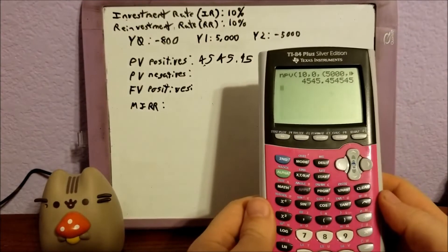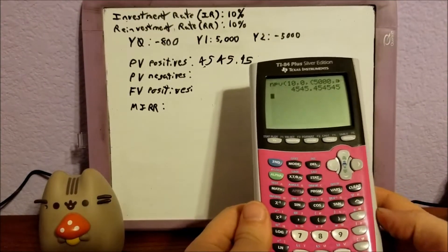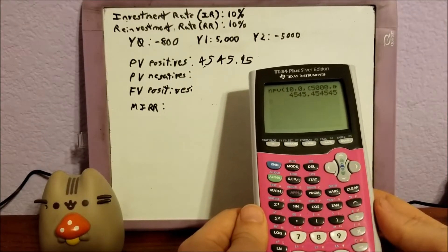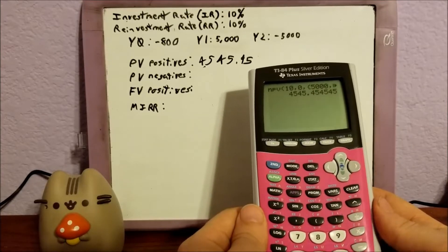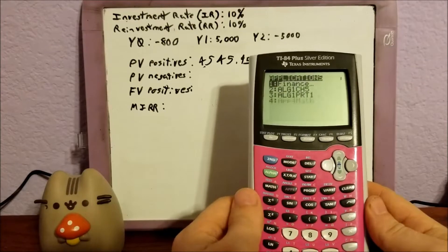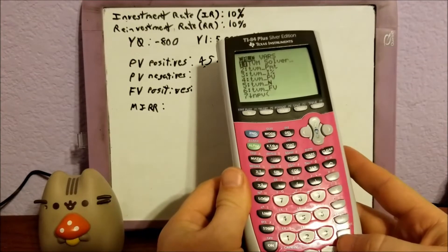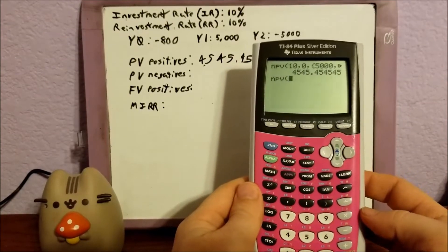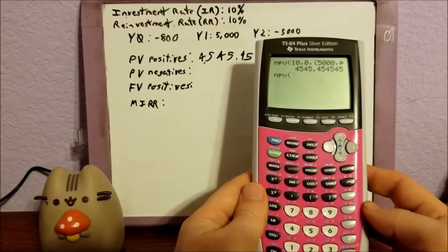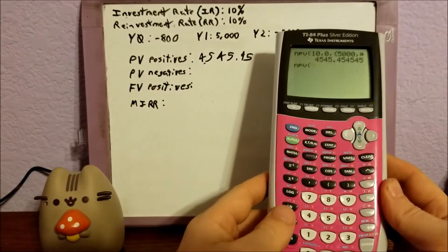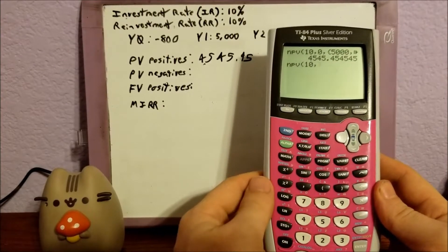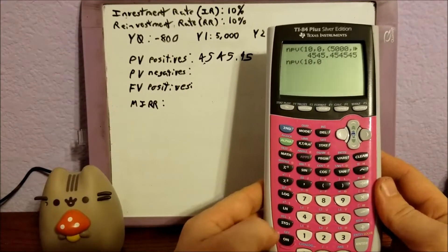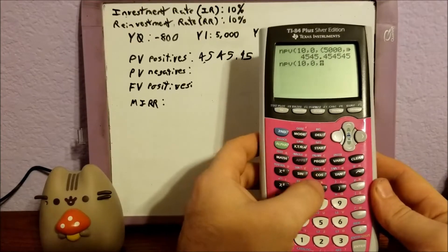Now for the negatives. Let's go back to Apps, finance calculators, and hit seven for NPV again. Again, the investment rate is the same as the reinvestment rate, so that's still 10, comma. We're still ignoring year zero, so that's zero, comma. Curly braces.